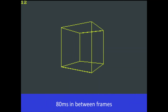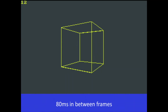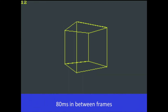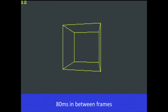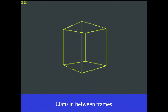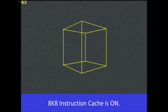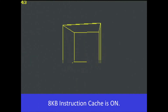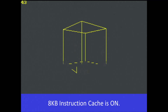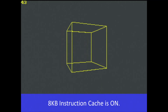Now we switch to a video showing the same rotating cube with an 80-millisecond pause between two frames. The screen doesn't flicker as much, but you will still need some imagination to see a rotating cube. And now we're back to 20-milliseconds pause between frames and with the instruction cache on — we get about 43 frames per second.